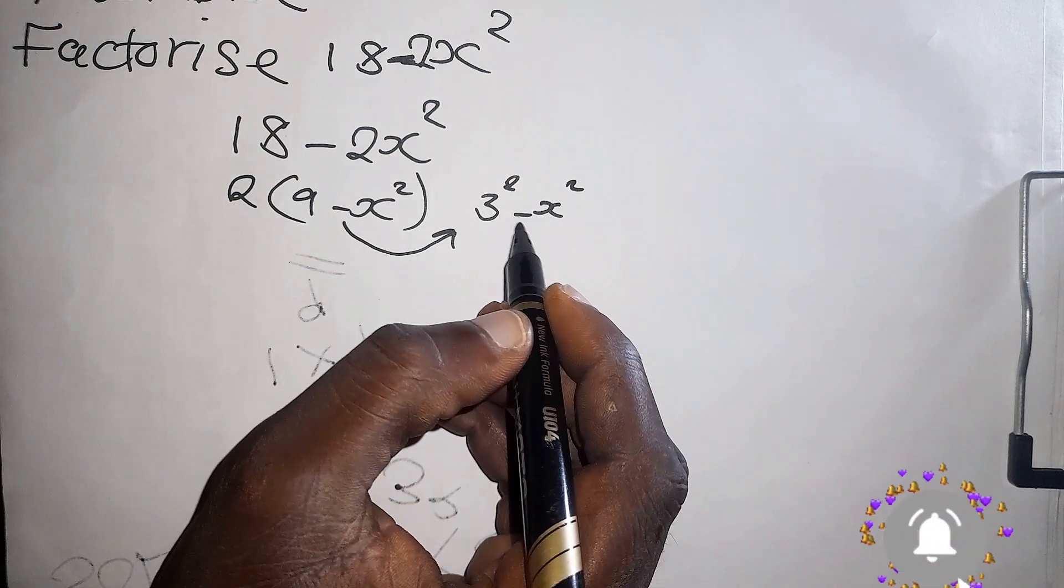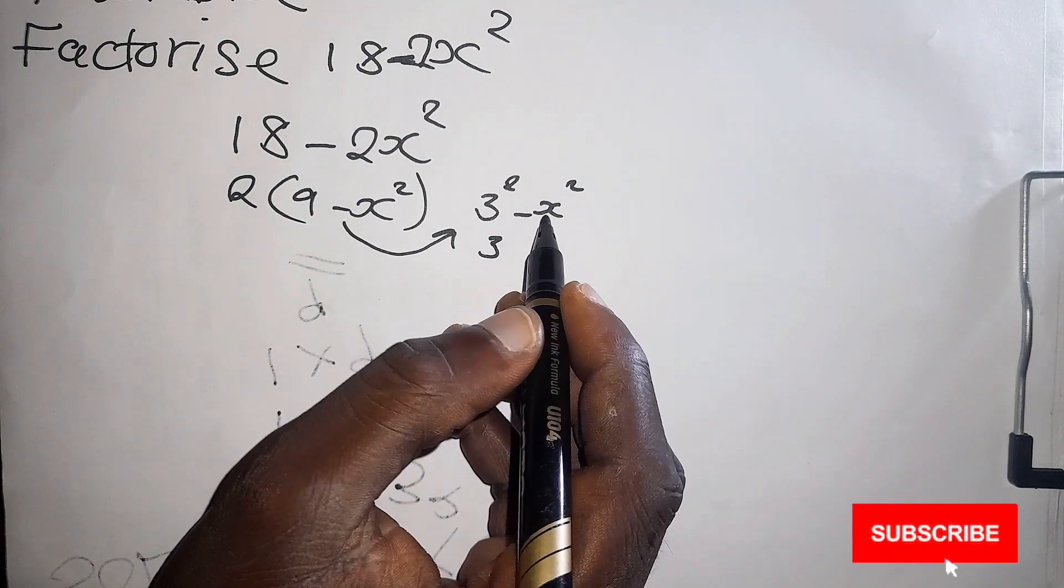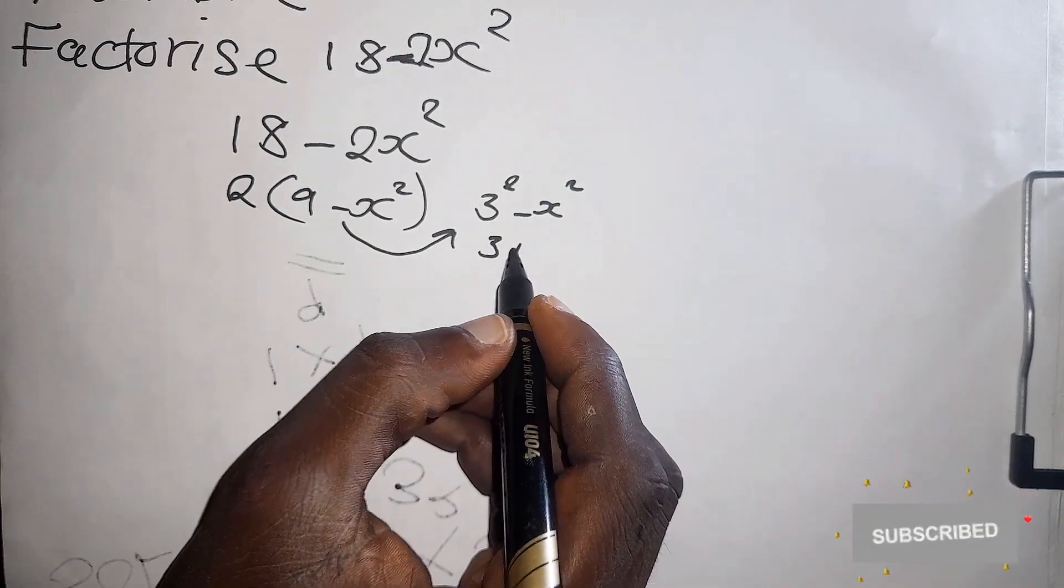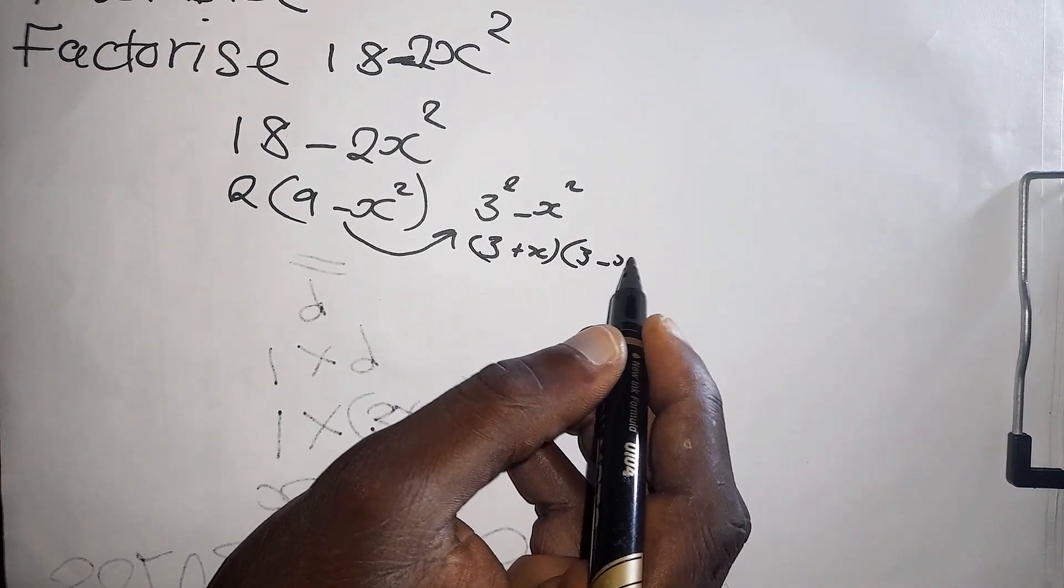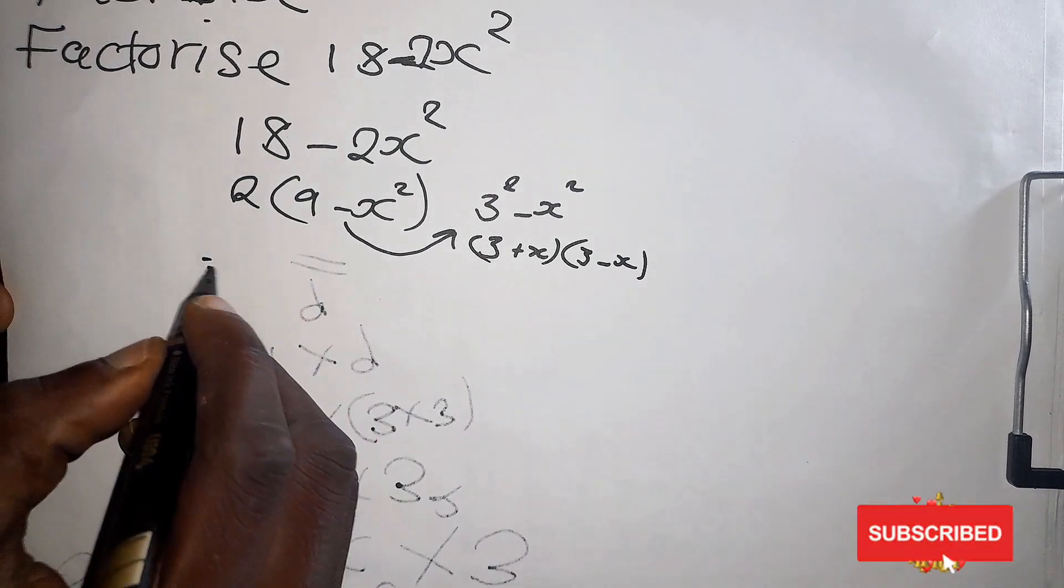it will be 3 squared minus x squared, which can be written as 3, when you factorize this one,